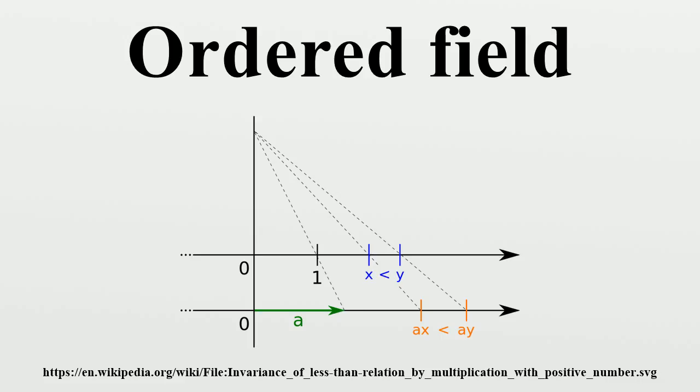Fans and super-ordered fields: A fan on F is a pre-ordering T with the property that if S is a subgroup of index 2 in F containing T minus 0 and not containing minus 1, then S is an ordering. A super-ordered field is a totally real field in which the set of sums of squares forms a fan.